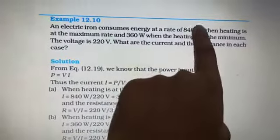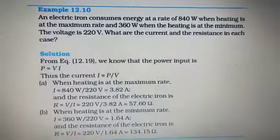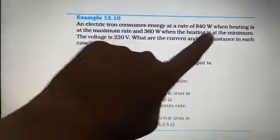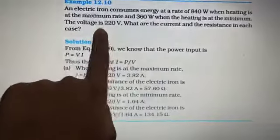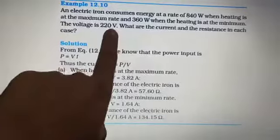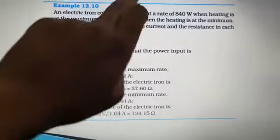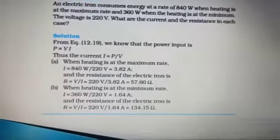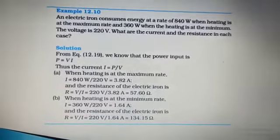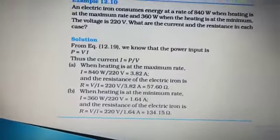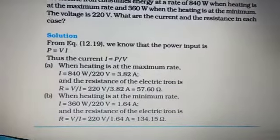In the question they have given us 840 W, watts is the SI unit of power. 840 is the power at maximum rate and 360 when it is minimum. The voltage given is 220, they are asking current. They have given power, they have given voltage, they are asking current. What is the formula showing the relationship between power, voltage and current? The formula is P equals V times I.